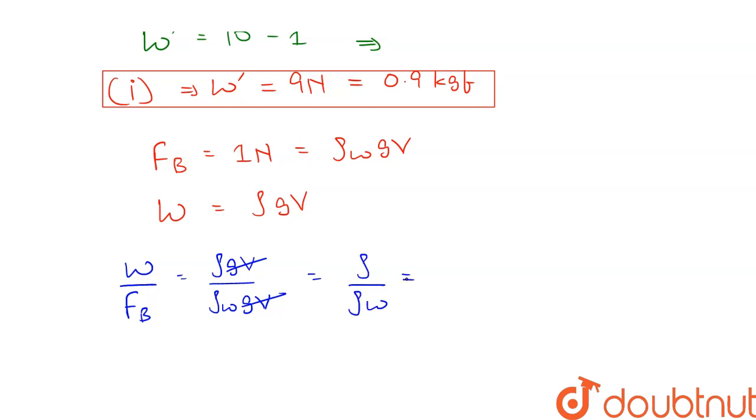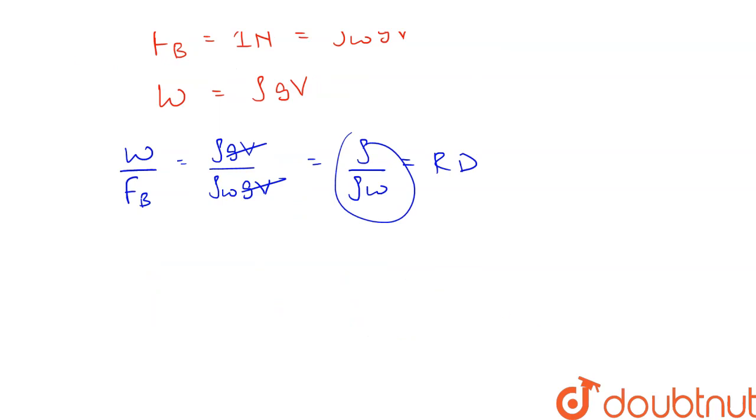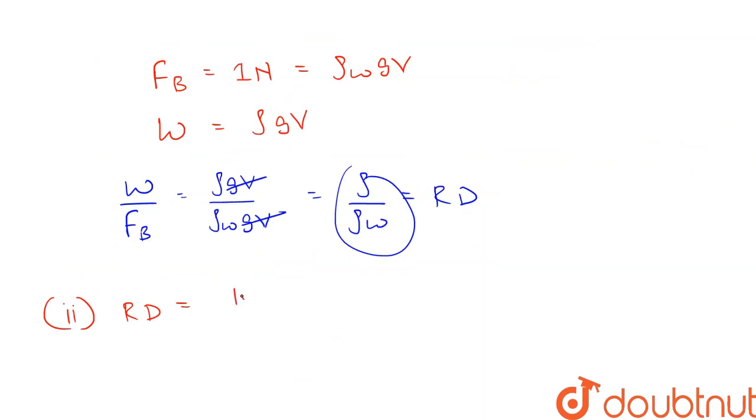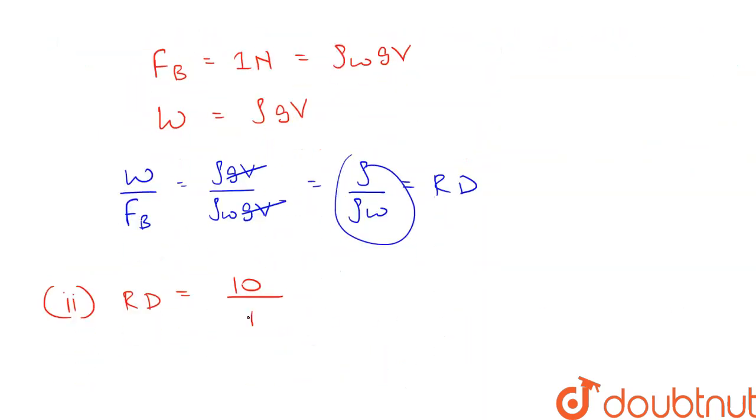Therefore the relative density RD will be equal to W, which is 10, divided by FB, which is equal to 1. Therefore the relative density is 10. This is our answer to second part.